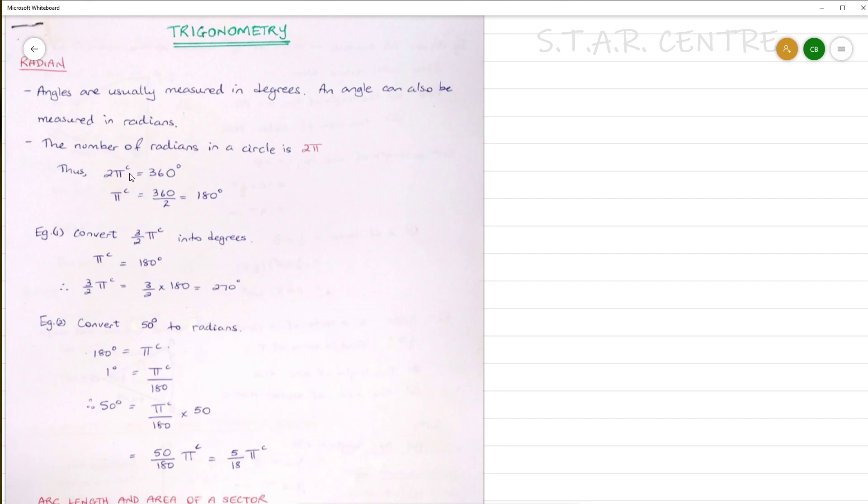This little c at the top is representing radians, just like this little o at the top represents degrees. Thus, 2π radians equal 360 degrees. So π radians would be 360 divided by 2, which is 180 degrees. This is very important to remember when converting from degrees to radians or radians to degrees.